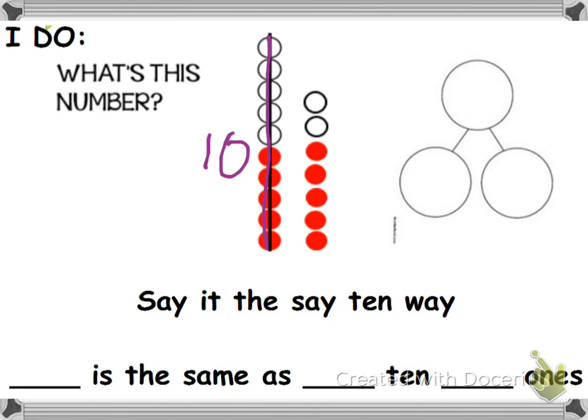So this column that has a line through it is showing that it's 10, showing that you can't put any more in that column. Once you have 10 in that column it's full. So you have 10 in this column.